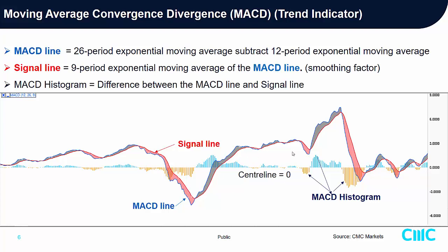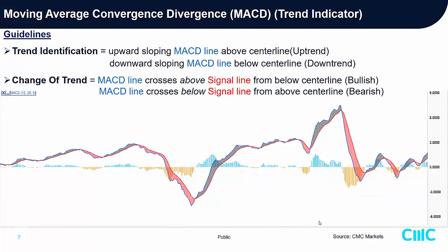Graphically, the MACD line is the one in blue. If this MACD line goes above the center line — which is zero — that means the 26-period EMA is above the 12-period moving average. The red line, lagging behind the blue line, is called the signal line — we call it the smoothing factor. The signal line is used to generate buy/sell signals based on key properties of the MACD. The histogram is the difference between the blue MACD line and the red signal line.